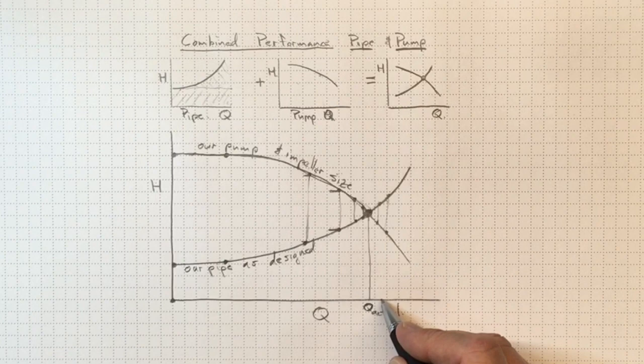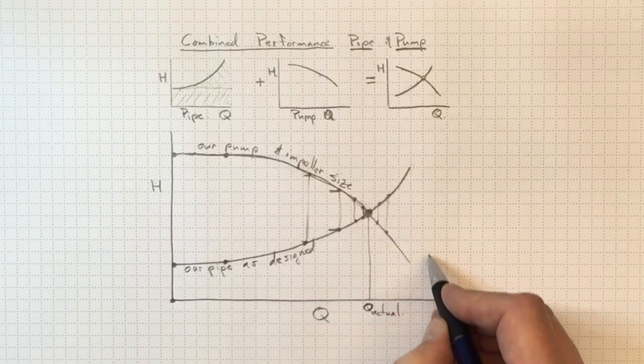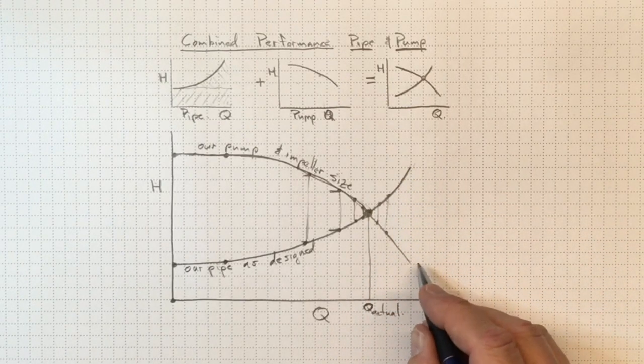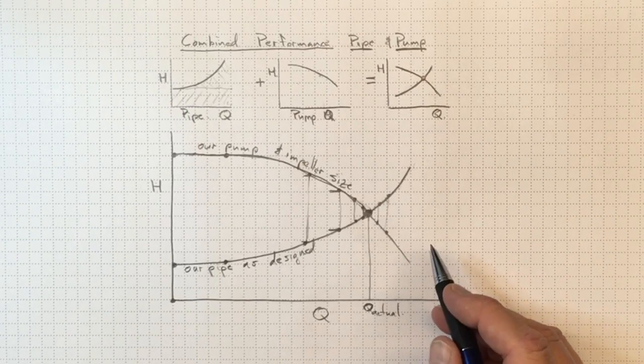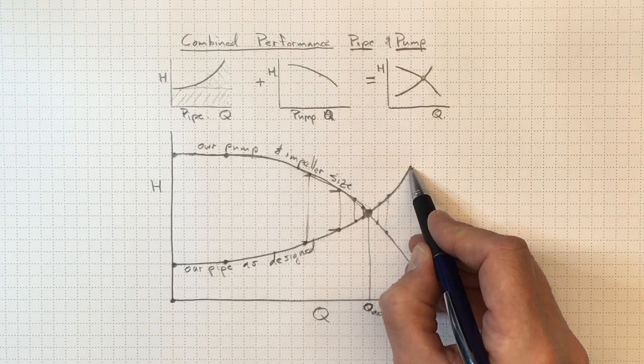Now if we wanted to change that, well we can't get this piping curve to move down so that it's even easier to flow without actually building new piping. The resistance is built in there by the diameter of the pipe and the valves and fittings that we put in there.